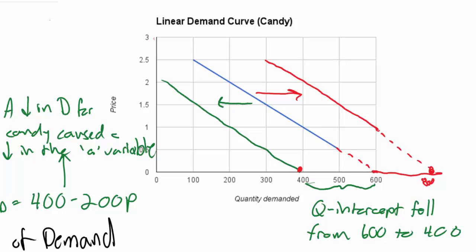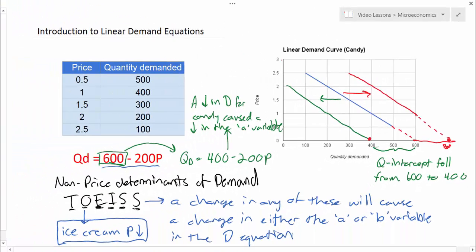So anything that increases the demand for a good would cause the A variable to increase. That's one way we can show how a change in the demand for a good would affect the demand equation.